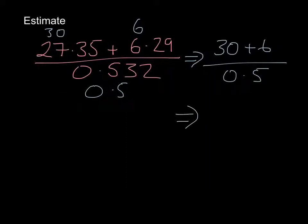That becomes 36, and it's divided by 0.5. Now, if you refer back to what I said in the last part, when we divide by 0.5, it's the same as doubling.